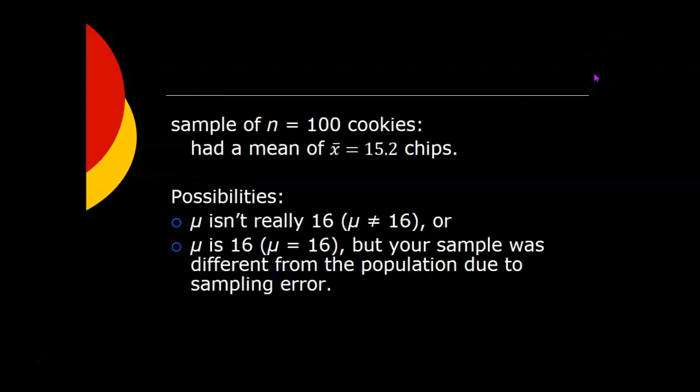Now what if you get 100 cookies? You really want to find out. So you go out, you buy enough bags of those cookies that you can look at 100 cookies. And in each one of those 100 cookies, you count how many chocolate chips there are. And let's say you do that. And you come up with a mean of 15.2 chips for that sample of 100 cookies. So now you're looking at a pretty big sample, 100 cookies, and they have an average of only 15.2 chocolate chips per cookie.